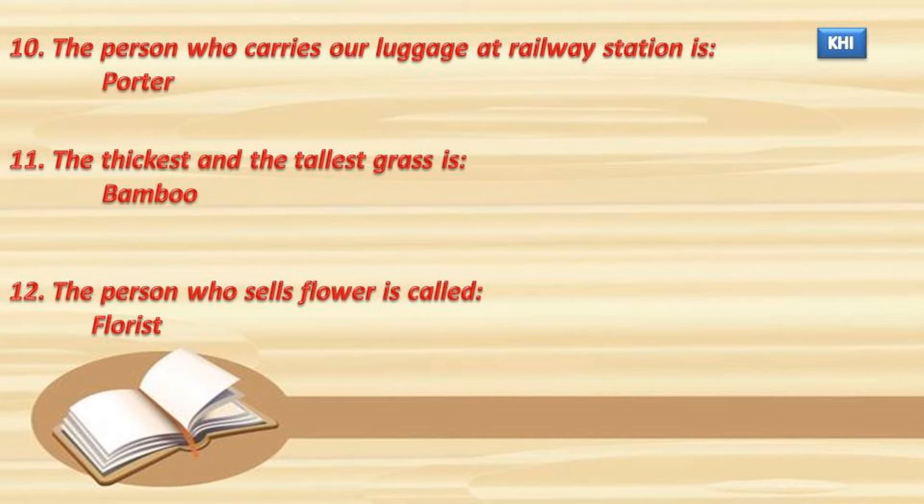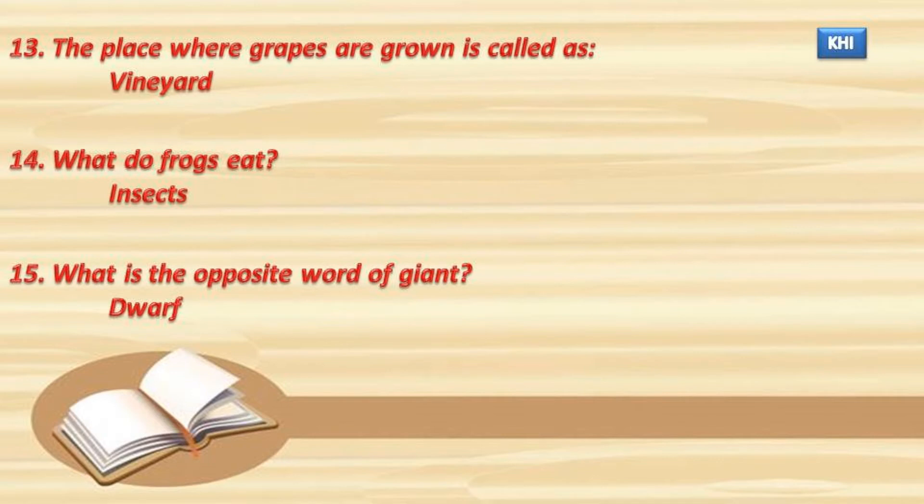12. The person who sells flour is called Florist. 13. The place where grapes are grown is called a Vineyard.